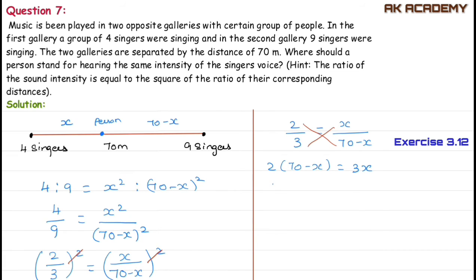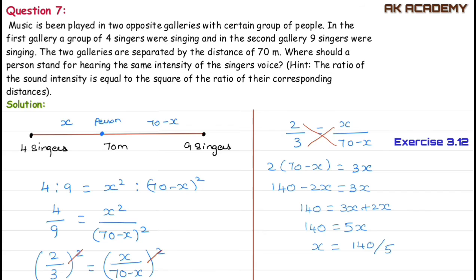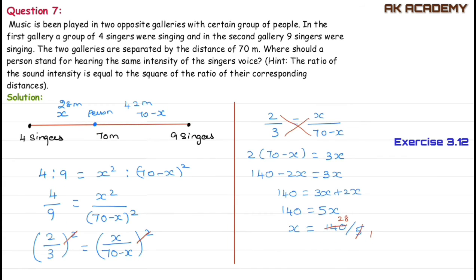Expanding: 2 times 70 gives 140, so 140 minus 2x equals 3x. Bringing terms together: 140 equals 5x, therefore x equals 28.